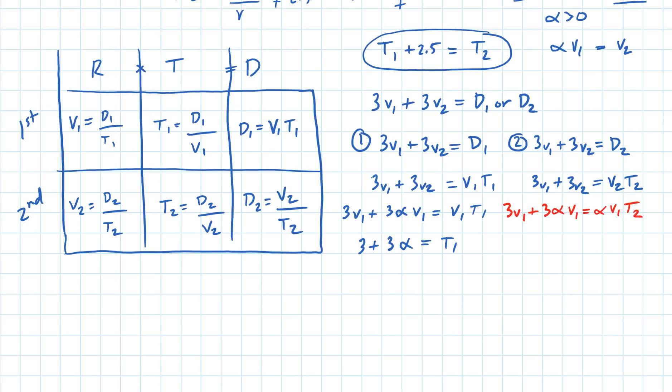And then here I can get rid of the V1s, so 3 plus 3 alpha equals alpha T2.